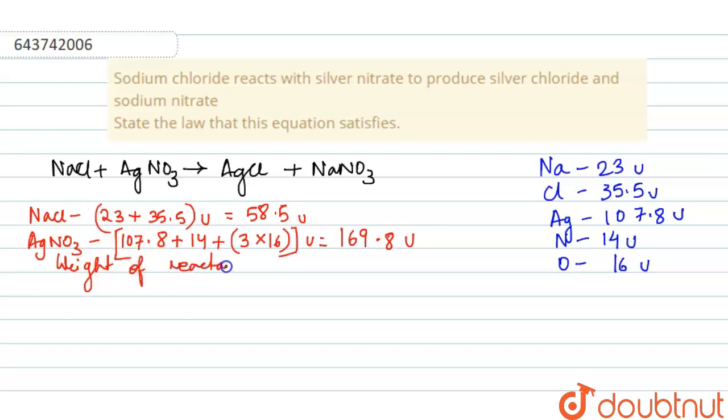Now if we see the weight of reactants, we just have to add the mass of NaCl and AgNO3 because those are the reactants. So if we add them, we will get 228.3 atomic mass unit.